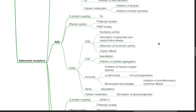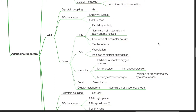A2 receptors: G-protein coupling to Gs. Effector system is via increased adenylyl cyclase and increased MAP kinase. Activation of A2A results in excitatory activity in the CNS, stimulation of glutamate and acetylcholine release, reduction of locomotor activity, and trophic effects. In the CVS: vessel dilation and inhibition of platelet aggregation. In immunity: inhibition of reactive oxygen species. In lymphocytes: immunosuppression. In monocytes and macrophages: inhibition of pro-inflammatory cytokine release. Activation of A2A produces vessel dilation in the kidneys. In cellular metabolism: stimulation of gluconeogenesis.